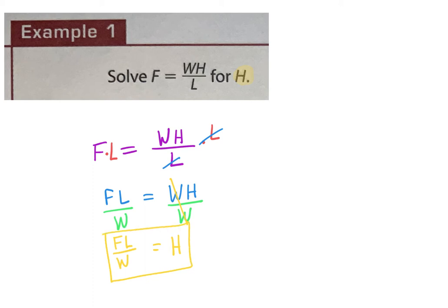Why would I do this? Well, if I have some type of chemical equation and I'm always solving for H, in the original form I would have to plug everything in except H, then multiply and divide over and over — more room for error. When you set it up equal to your variable, you can just plug everything in and do order of operations.